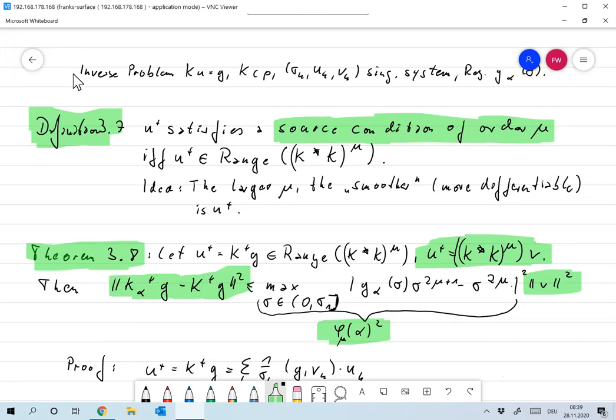Since there was a mix-up between F and NU and G, let me quickly state where we are. We're looking at the inverse problems K·U equals G, K compact.